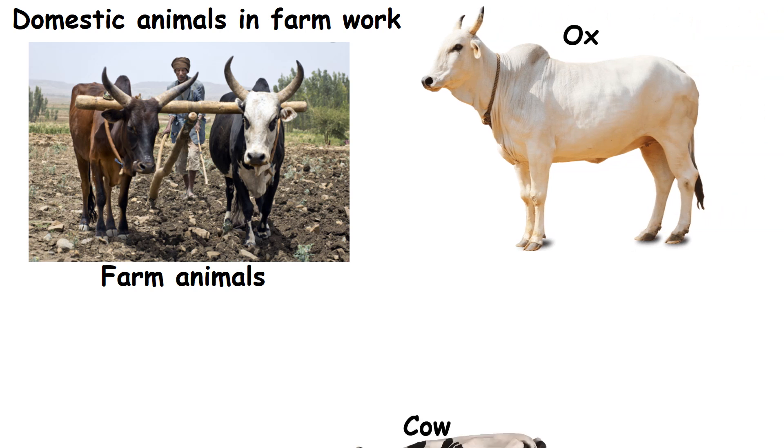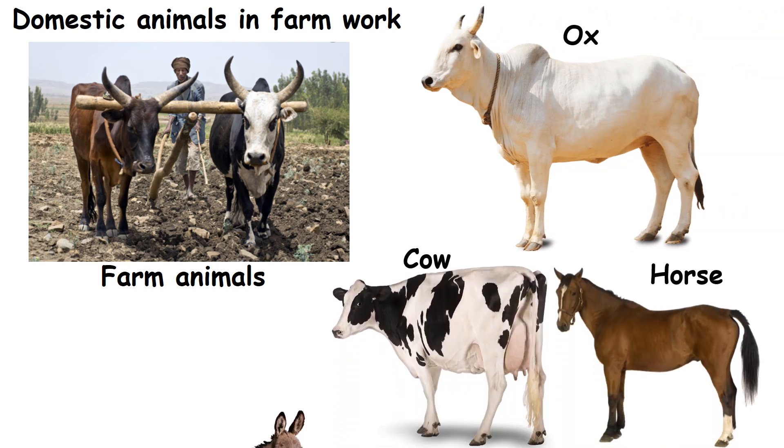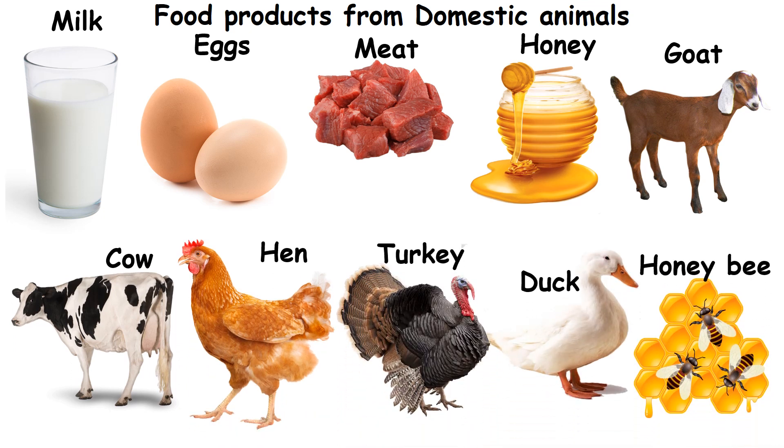Examples of farm animals: ox, cow, horse and donkey. Some domestic animals give us food items like milk, eggs, meat and honey. Examples: goat, cow, hen, turkey, duck and honeybee.